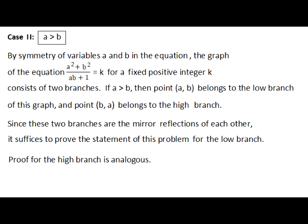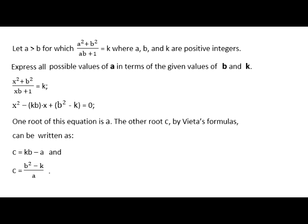If a lattice point with positive integer coordinates A and B satisfies this equation, where K is a positive integer, then the lattice point with coordinates B and A also satisfies this equation, due to symmetry of A and B in this formula. For this reason, it suffices to prove the statement of this problem for the lower branch of this graph, where all the lattice points have their A coordinates greater than their B coordinates.